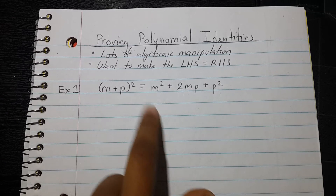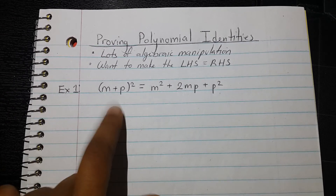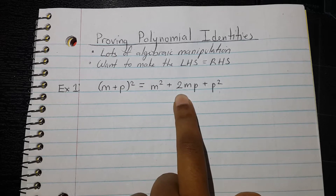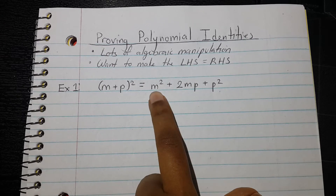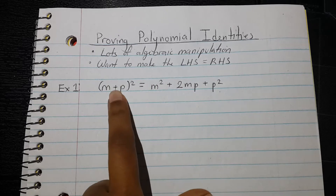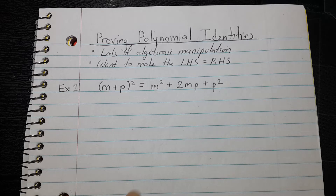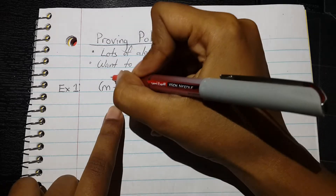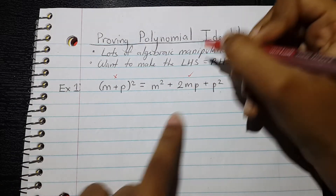I have to multiply the parentheses and combine like terms. On the right-hand side, everything seems to be pretty simplified — there's nothing I can combine, no parentheses I need to get rid of. So I'm only going to be focusing on simplifying the left-hand side. The left side is not ready to go, but the right side is good.